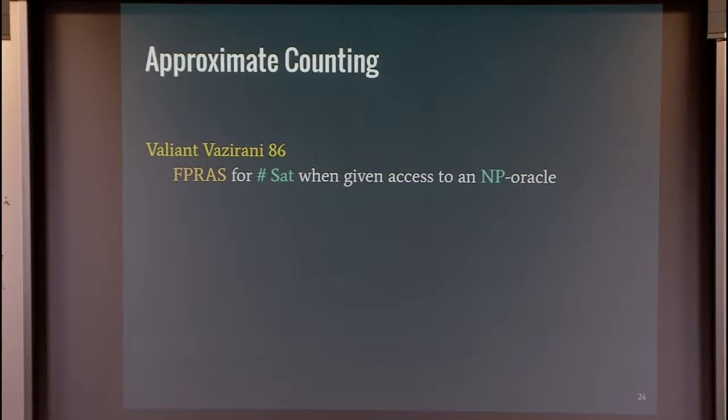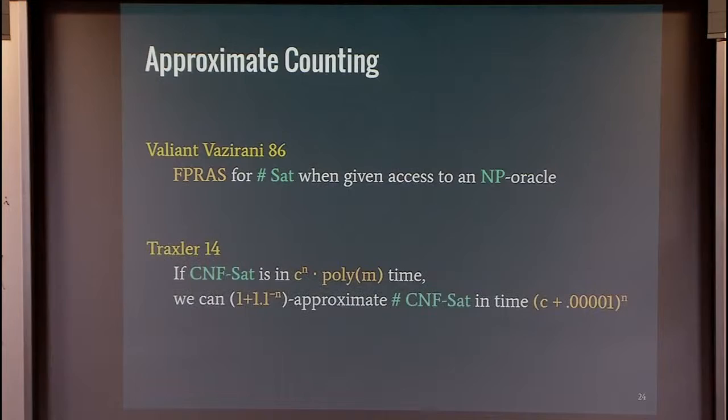One word about approximate counting. If we have an NP oracle, then there is an FPRAS for number SAT. And in this exponential time world, we have some word of an analogy here. If CNF-SAT can be decided in time c^n for some c less than 2, then you can get some kind of FPRAS or some kind of approximation, which is 1 plus some exponentially small number—much better than a constant approximation—in time c plus some very small number. So if you can decide SAT faster than 2^n, then you can also approximate SAT faster than 2^n. That's the gist of this.